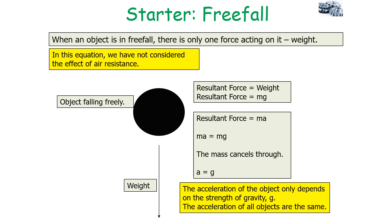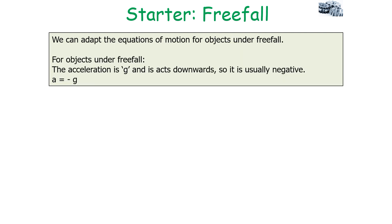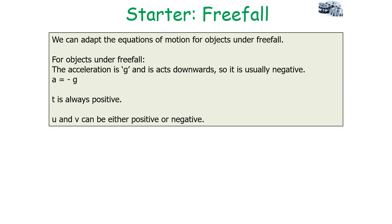This idea does not consider the effect of air resistance, but we can adapt the equations of motion for objects under freefall. For objects under freefall, we can say that the acceleration is g and is acting downwards, so it's usually negative: a = -g. We say that t, the time, will always be positive. u and v could either be positive or negative depending on the situation, and s, the displacement, can be positive or negative depending on the situation.